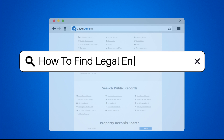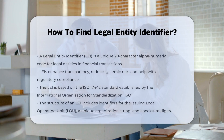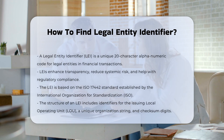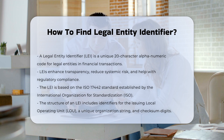How to find a legal entity identifier. A legal entity identifier, LEI, is a unique 20-character alphanumeric code assigned to legal entities participating in financial transactions. This identifier is crucial for enhancing transparency, reducing systemic risk, and enabling compliance with regulatory requirements.